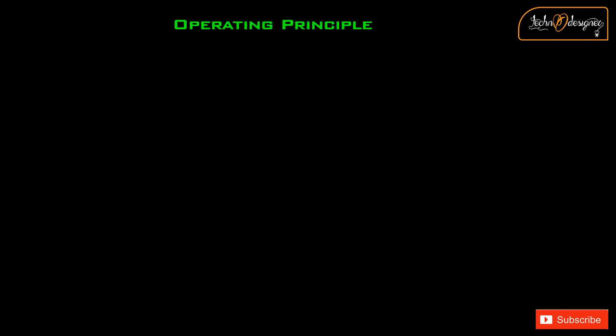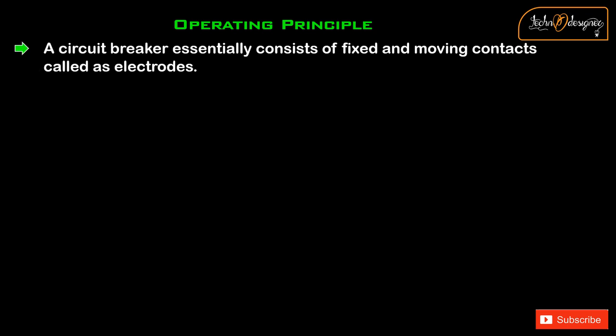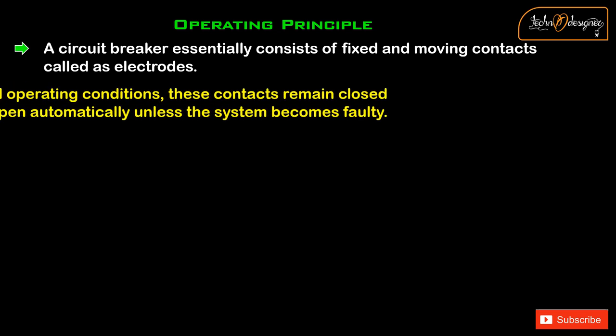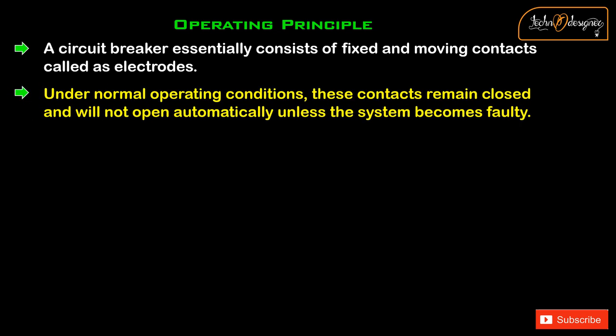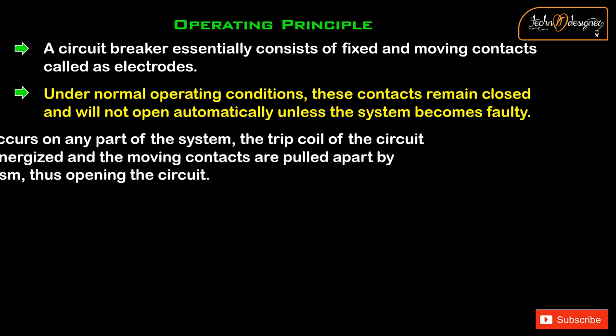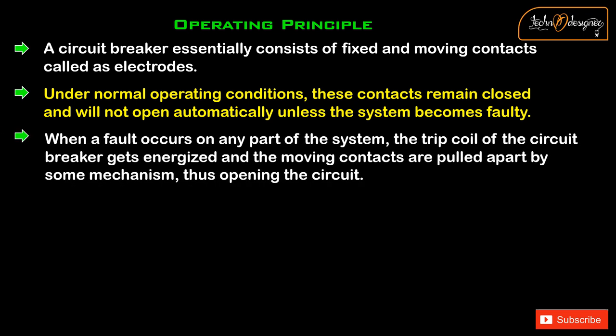Operating principle: A circuit breaker essentially consists of fixed and moving contacts, called electrodes. Under normal operating conditions, these contacts remain closed and will not open automatically unless the system becomes faulty. When a fault occurs on any part of the system, the trip coil of the circuit breaker gets energized and the moving contacts are pulled apart by some mechanism, thus opening the circuit.